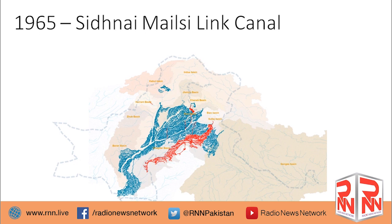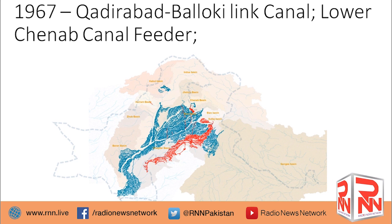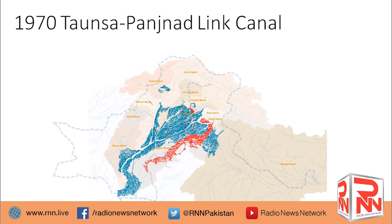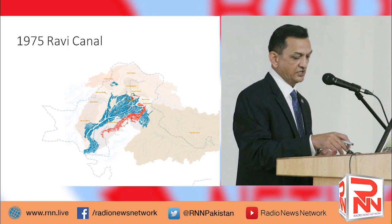In 1965 there was again a link canal, and in 1966 the Trimmu-Islam Canal. Then more link canals in 1967. Into the 1970s came the Tonsa-Panjnad Link Canal. So many link canal projects were being done. Then there was the Ravi Canal — on the Indian side.